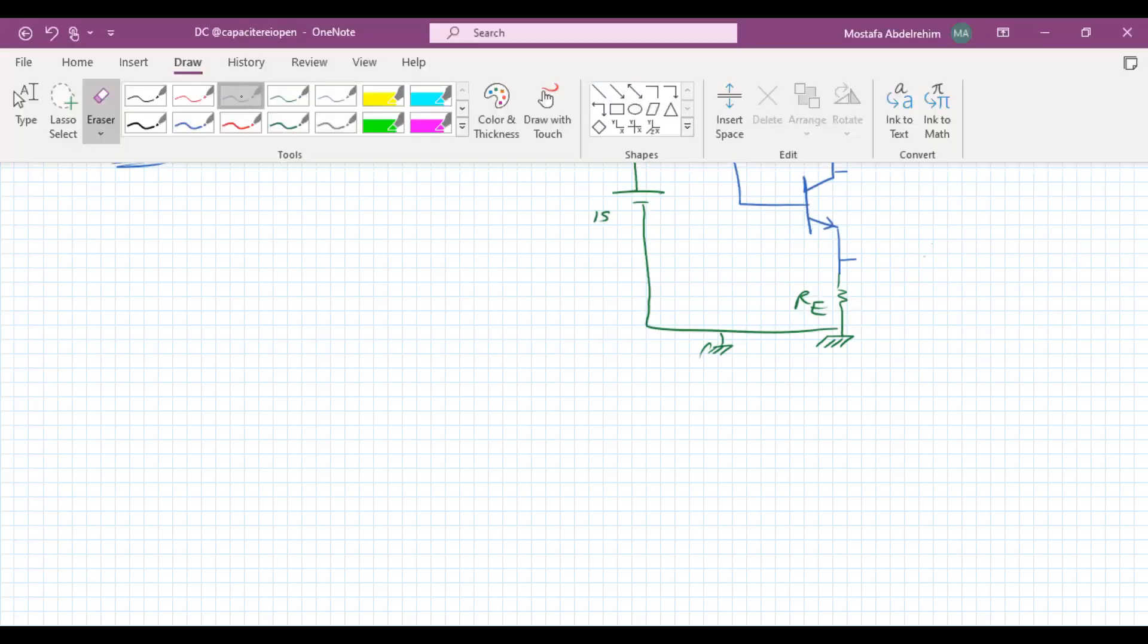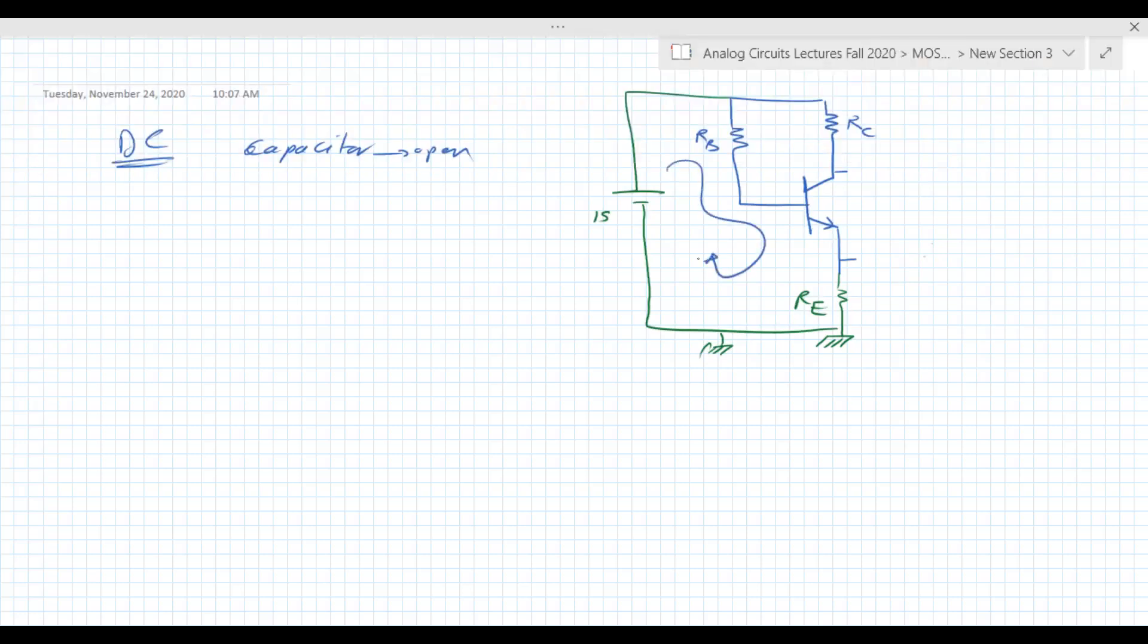Now I think it becomes very easy. You can do the loop here. This guy is IB, this guy is IE.